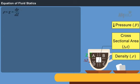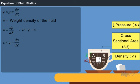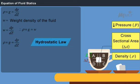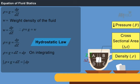In the equation, rho into G can be written as W, which is the weight density of the fluid. Thus, the equation rho into G equals ∂P/∂Z proves the hydrostatic law as stated already. This equation can be written as rho into G into dZ equals dP. Integrating on both sides, P equals rho·G·Z.